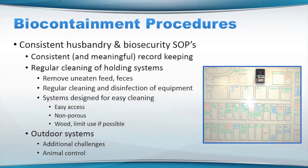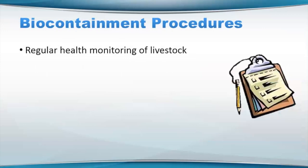Wood — a lot of people use wood, but if you can limit its use, that's great. It's a lot of times going to be really cheap, but just keep in mind if it's wooden it's porous and may actually collect things that you may not necessarily want. As we discussed, outdoor systems have their own challenges including animal control.